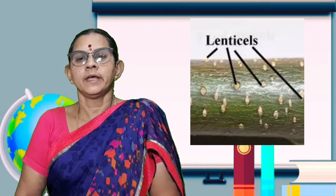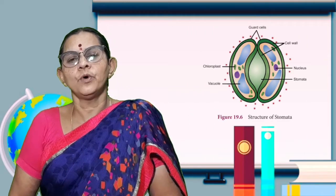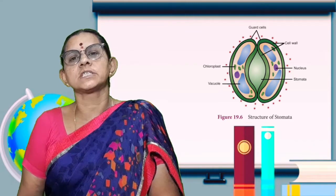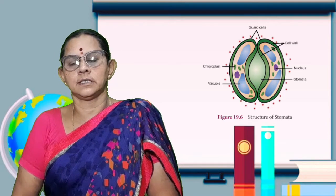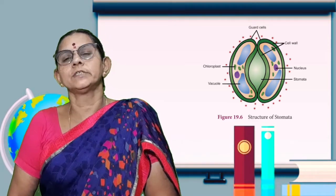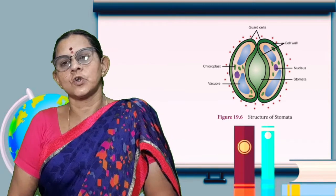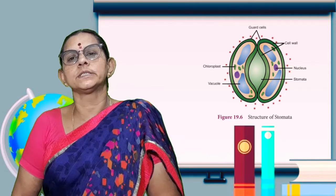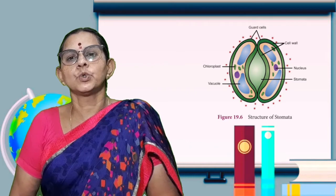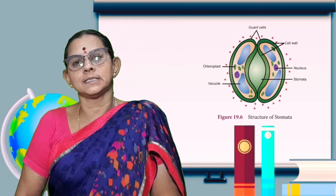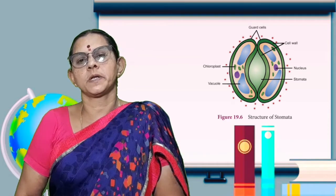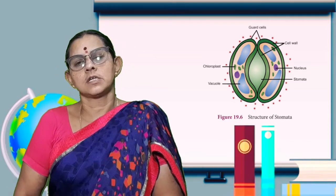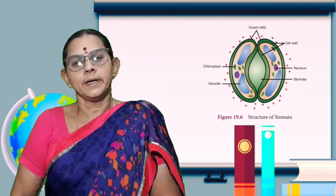Stomatal transpiration occurs through stomata openings, which are controlled by guard cells. The opening and closing of stomata is controlled by guard cells, and so the rate of transpiration is also controlled by guard cells.